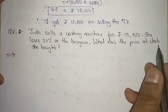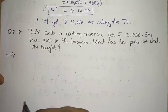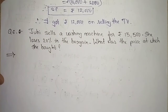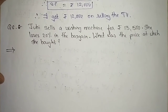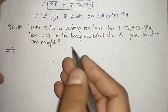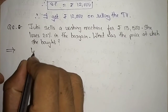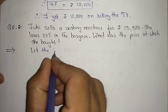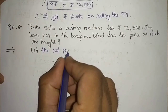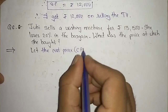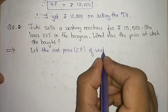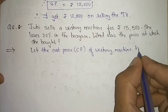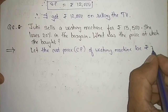We are supposed to find the cost price at which she bought the machine. Since we don't know the cost price, let the cost price of the washing machine be rupees x.